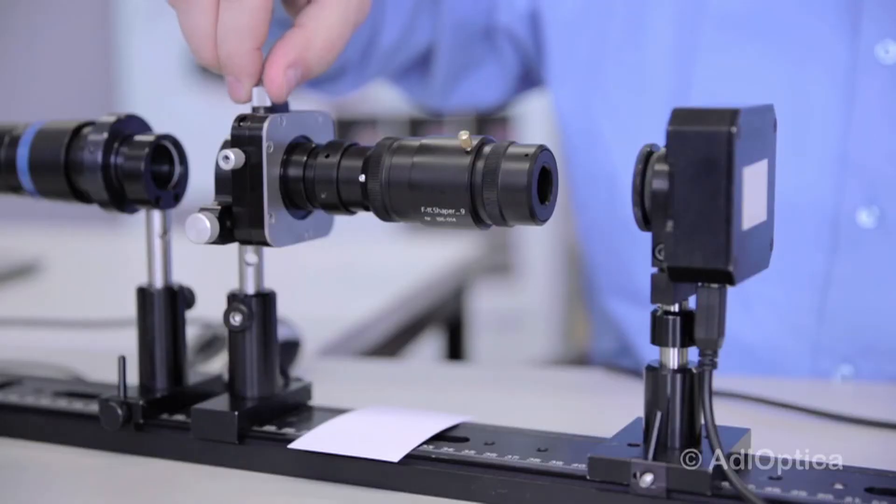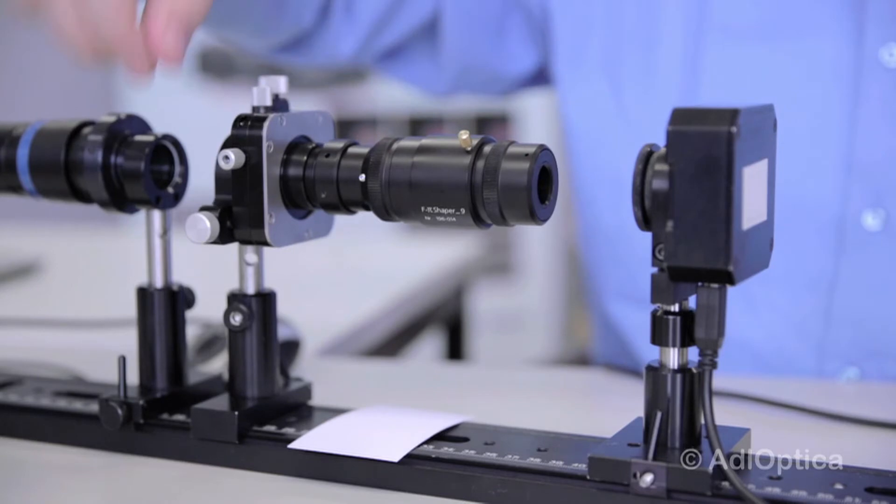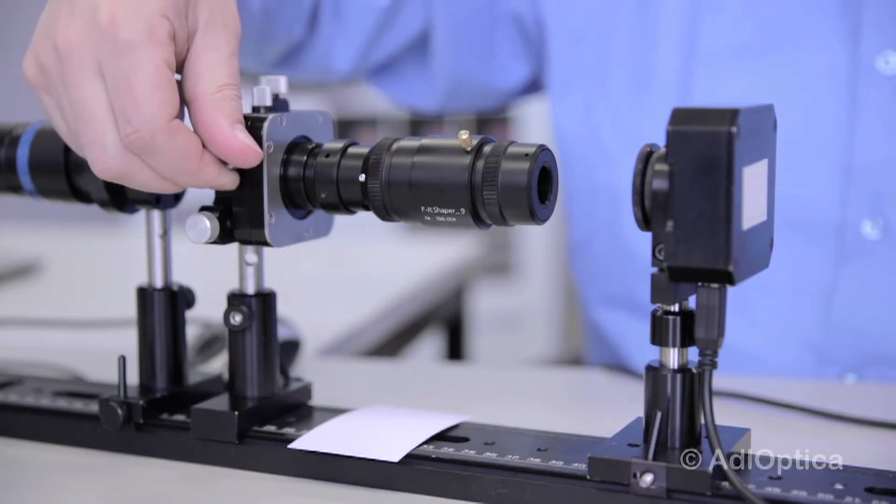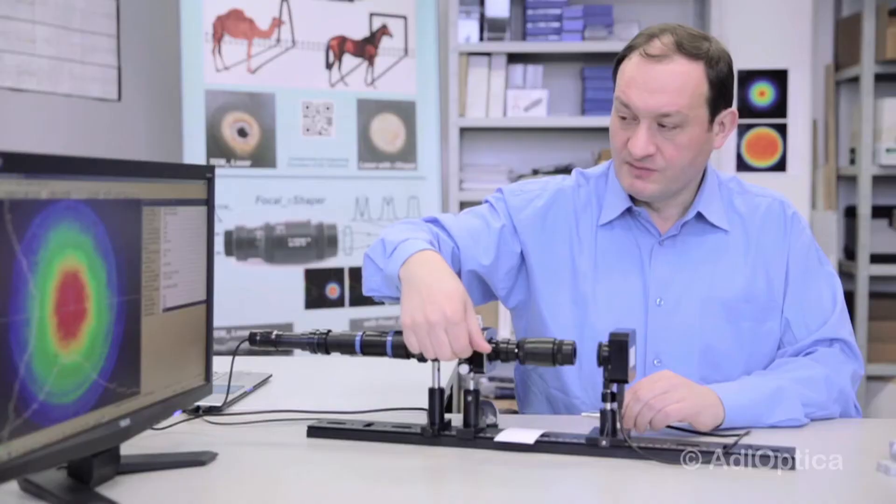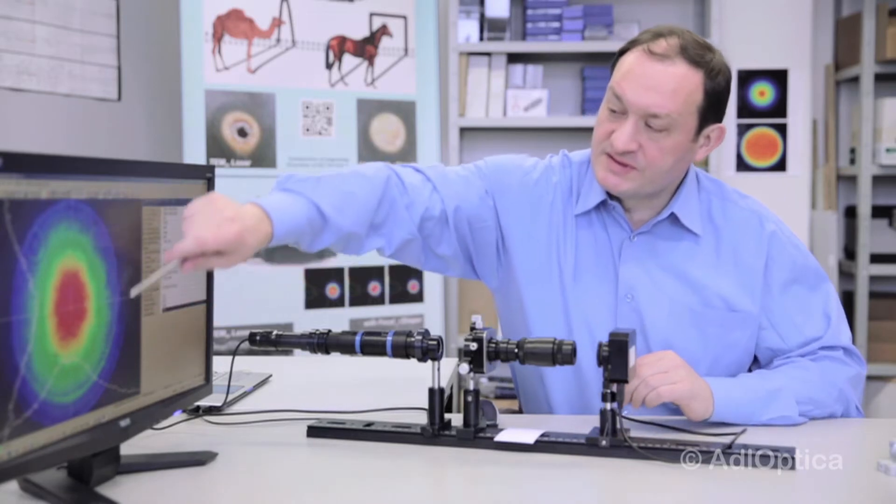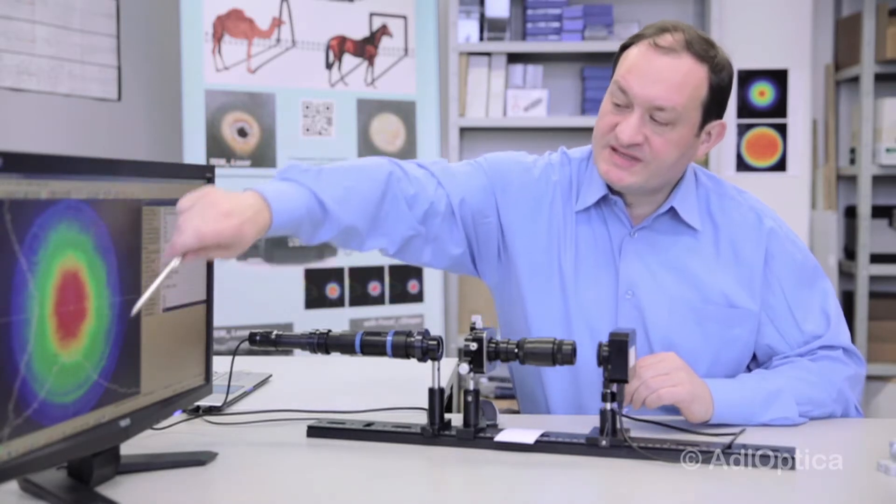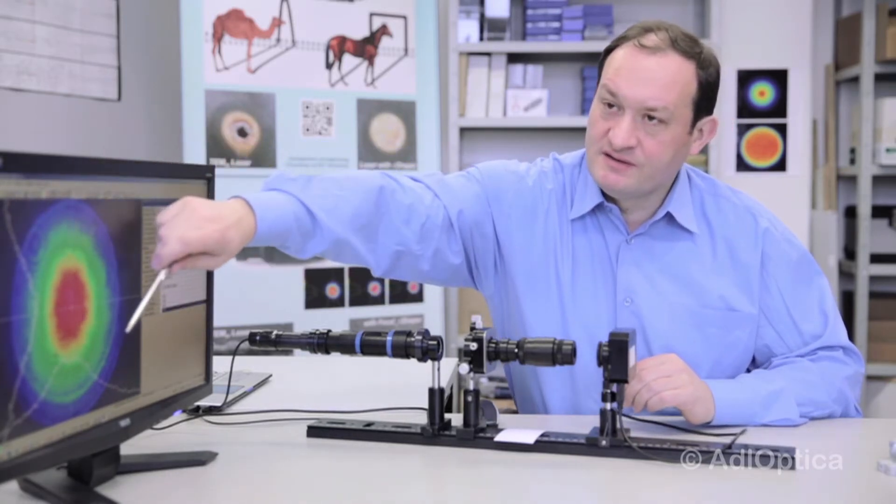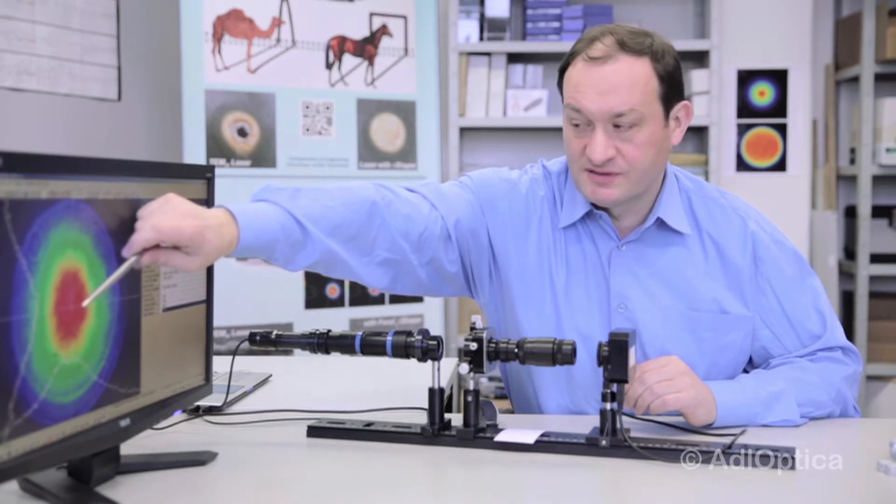And on this stage, we have to correct the position of the beam shaper because the pattern, again the beam, like always, should be symmetric. It means that we have to make this set of rings centered with respect to the central spot.